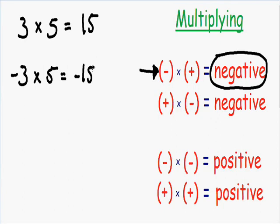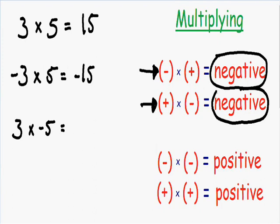Let's go over another example: positive 3 times negative 5. This is another example where we have one positive number and one negative number — a positive times a negative. So we know our answer is also going to be negative, meaning our answer is negative 15.